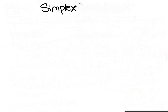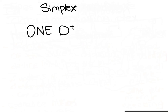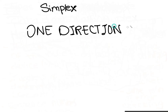First, let's talk about simplex data transmission. Simplex mode occurs when data can be sent in one direction only, from sender to receiver. An example of this would be sending data from a computer to a printer.